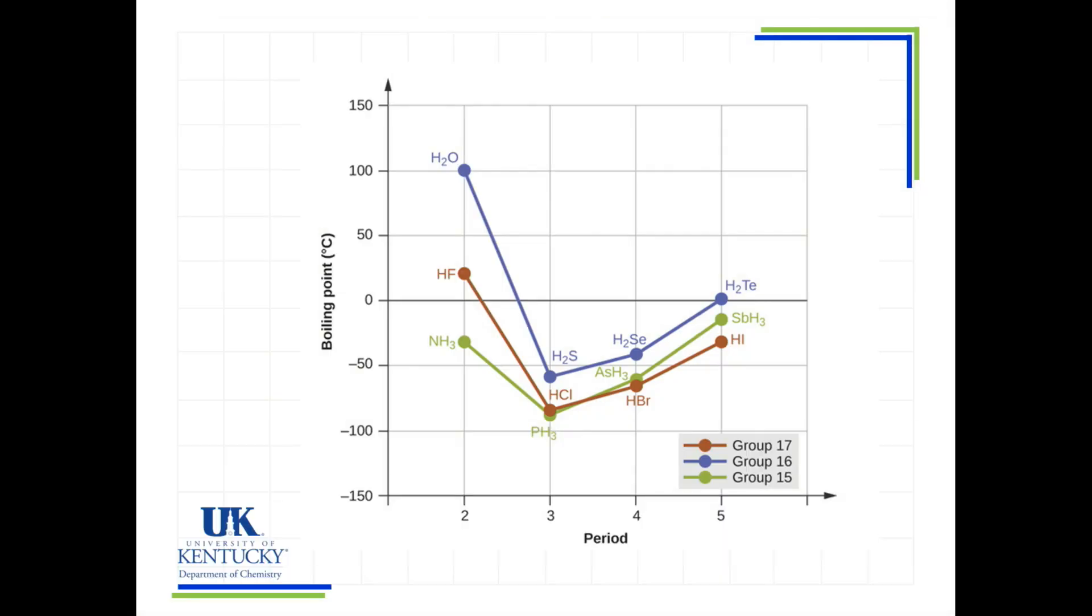All right. So we're going to examine this graph here for a moment. What do we see? We see the criteria for hydrogen bonding resulting in much higher boiling points than what you would expect. So let's follow the blue.